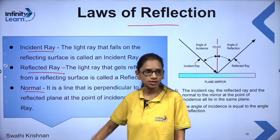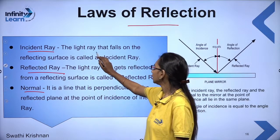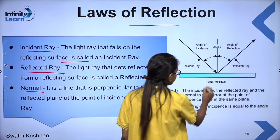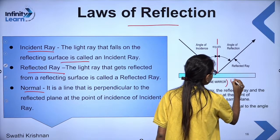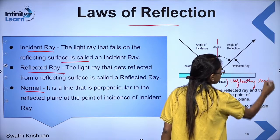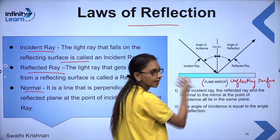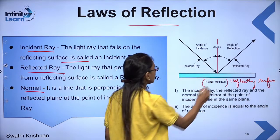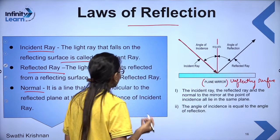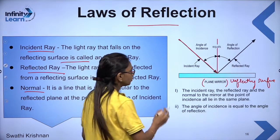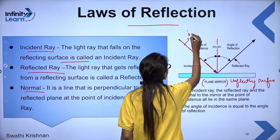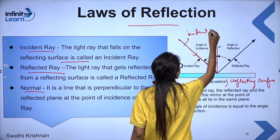The light ray that falls on the reflecting surface is called the incident ray. The plane mirror is your reflecting surface. Whatever ray of light is hitting and falling on the reflecting surface is your incident ray.